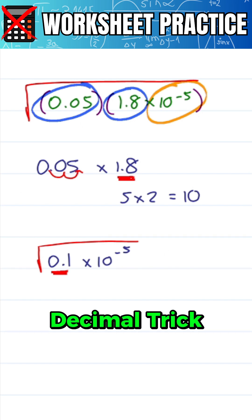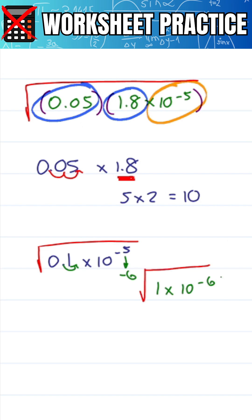Once again we'll use the decimal trick moving this once to the right making it bigger. So we have to bring this one down to the minus 6 to make it smaller. Now we have a decimal that we can work with, 1 times 10 to the minus 6.